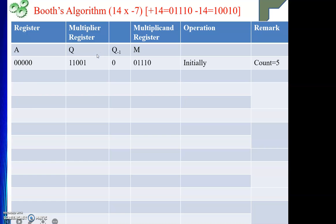Let's start. Suppose we need to compute 14 × (−7). Our multiplier is −7 and the multiplicand is 14. As we have seen when applying Booth's algorithm, sometimes we need to subtract the multiplicand and sometimes add it. Since subtracting the multiplicand is equivalent to adding its 2's complement, we will keep both ready.